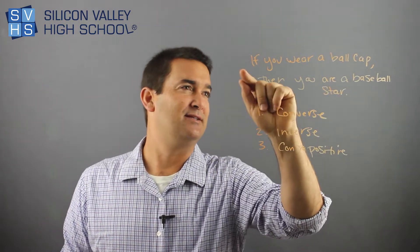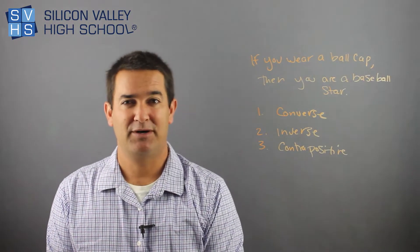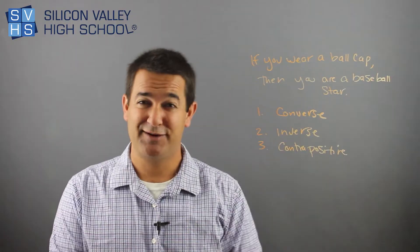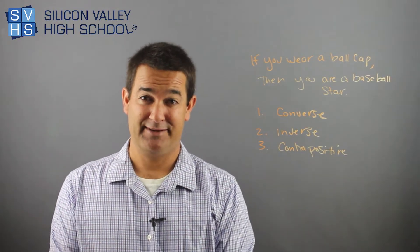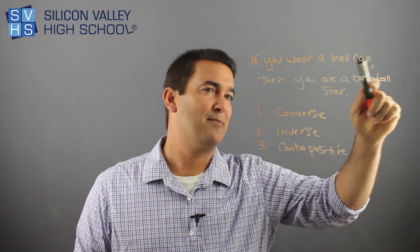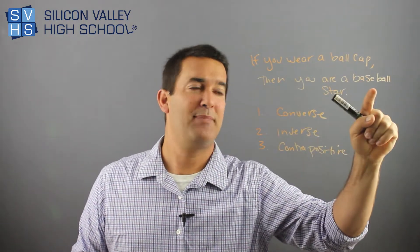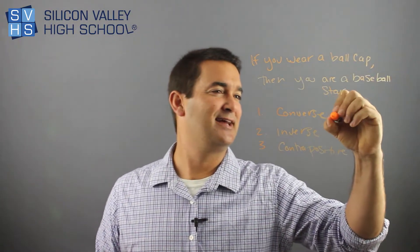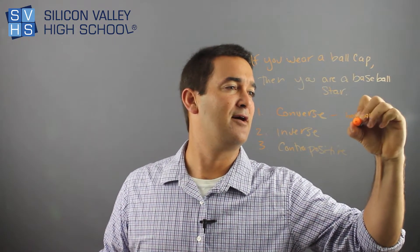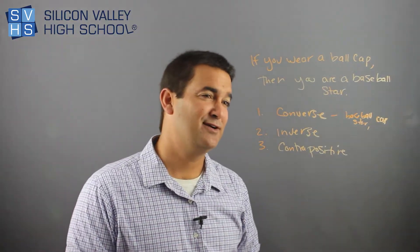Basically, here you have two pieces: part one and part two. 'If you wear a ball cap' is part one, and 'then you are a baseball star' is part two. The way I remember the converse is: if you wear Converse shoes, then obviously you can do a flip, because only outstanding athletes wear Converse shoes. So the converse is the flip of the statement. You would write: if you are a baseball star, then you wear a ball cap. All you did was take the two parts and flip them.